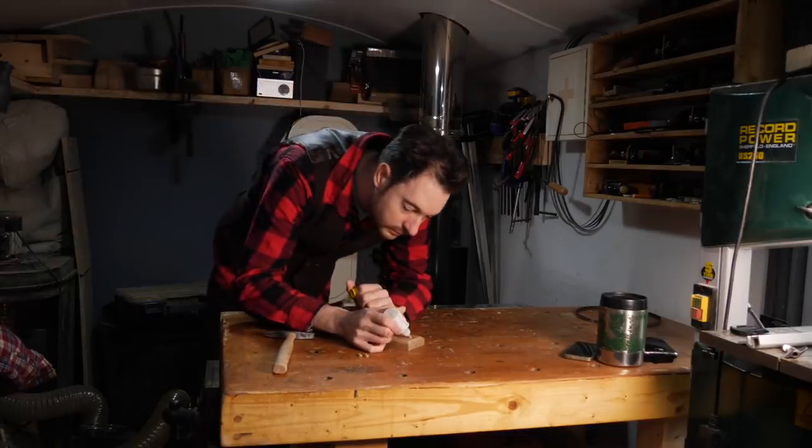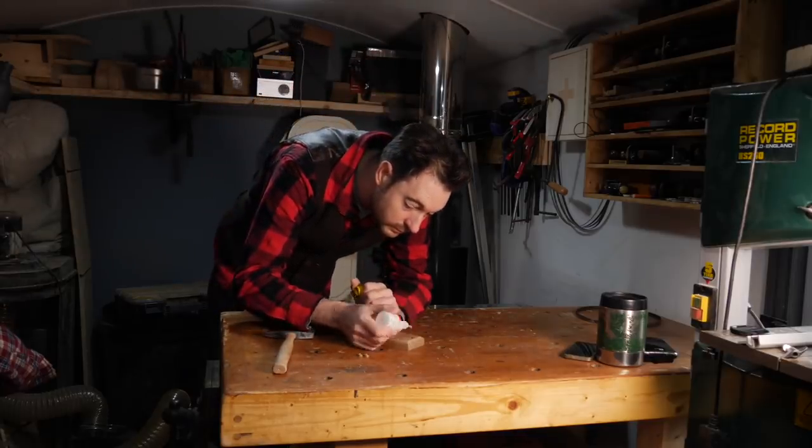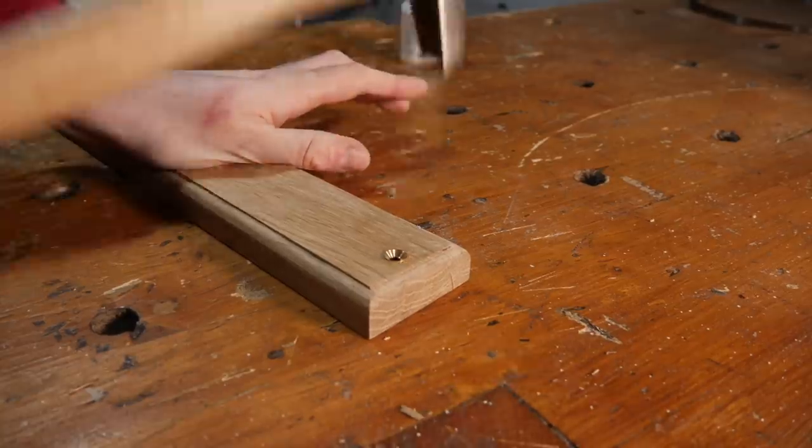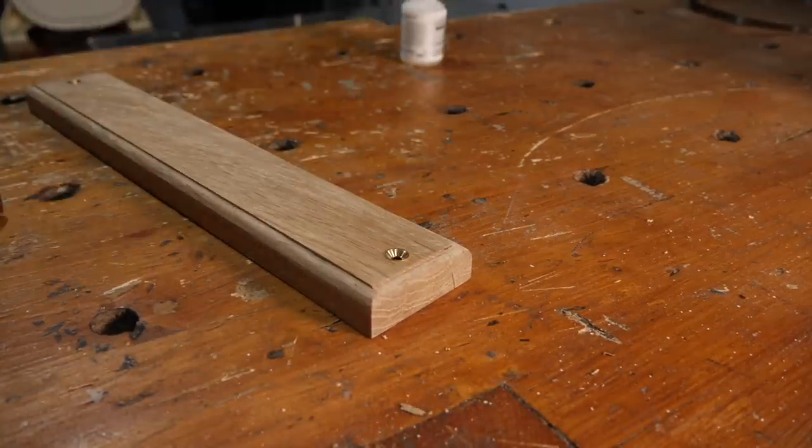I can give it all a quick sand down and then I can get these brass inserts installed. I just get a dab of super glue in the holes, then I can get them put into place and tap down. And that's it all done apart from finish.